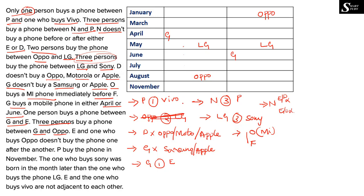With LG and Sony now positioned, we confirm this information is satisfied. Next clue: E and the one who buys Oppo don't buy one after another — E and Oppo buyer should not be adjacent. So if Oppo is in a given position, E cannot be immediately before or after it. P buys the phone in November — P is placed in November. Between P and Vivo there must be a gap of one person, so Vivo is placed one position before November.